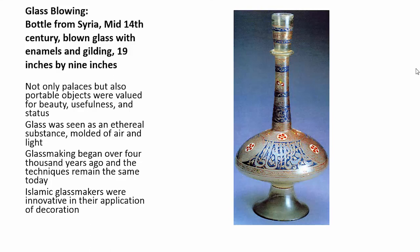Here is a beautiful hand-blown glass bottle from Syria with enamel on the blown glass and gilding — 19 inches by 9, almost 2 feet high. We have palaces and then these portable objects. Glass making is an old, old art form — I could spend an entire lecture just talking about Islamic glass, which is some of the most beautiful and incredible in the world. But we'll have to be satisfied with this one example. They were very innovative in their application of decoration.